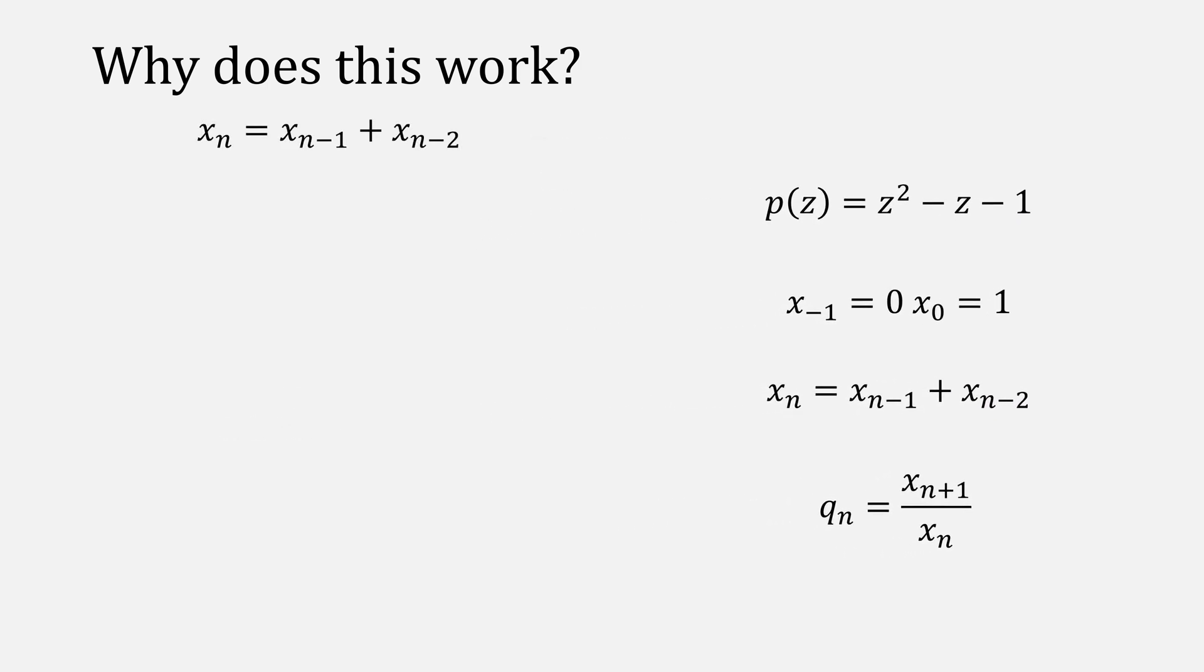We'll assume n is a large number and substitute in x sub n with z to the k. Then plug that into our equation. We can do some extra substitution to write that as z to the k is equal to some constant a times z to the k minus 1 plus another constant b times z to the k minus 2, where these constants are arbitrary.